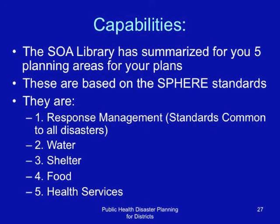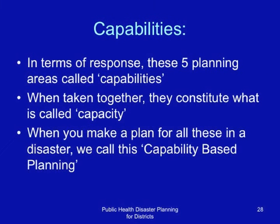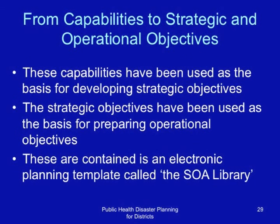When you make a plan based on these five capabilities, this is called capability based planning. When taken together, the sum of capabilities is what is described as capacity. These planning capabilities have been used as the basis for developing the strategic and operational objectives, which are contained in an electronic planning template called the SOA library.